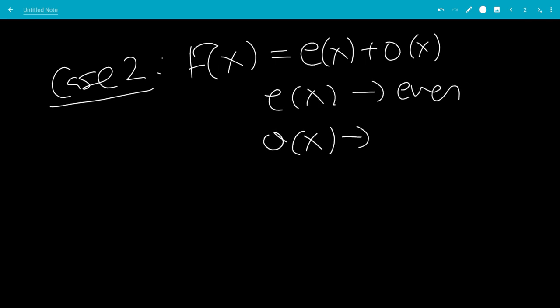Case 2: f(x) = e(x) + o(x), where e(x) is even and o(x) is odd.